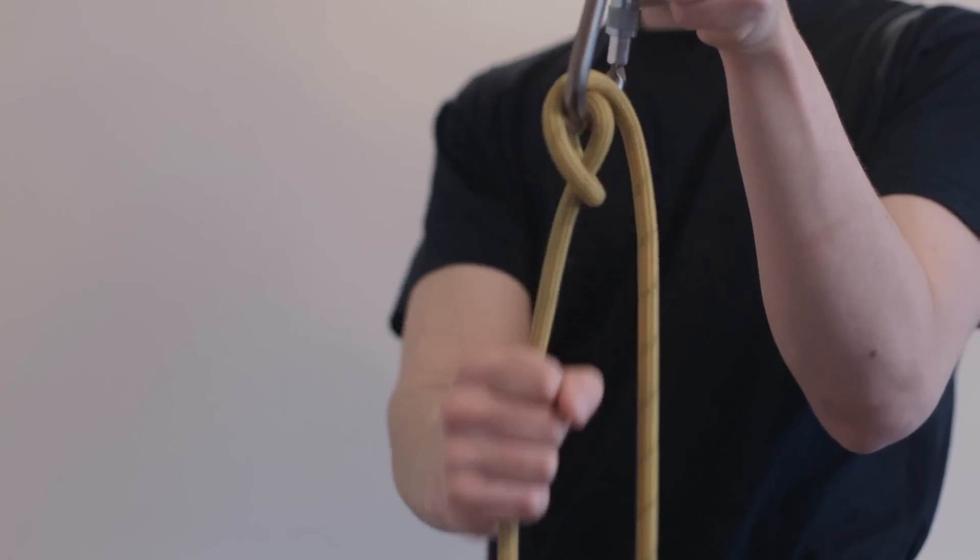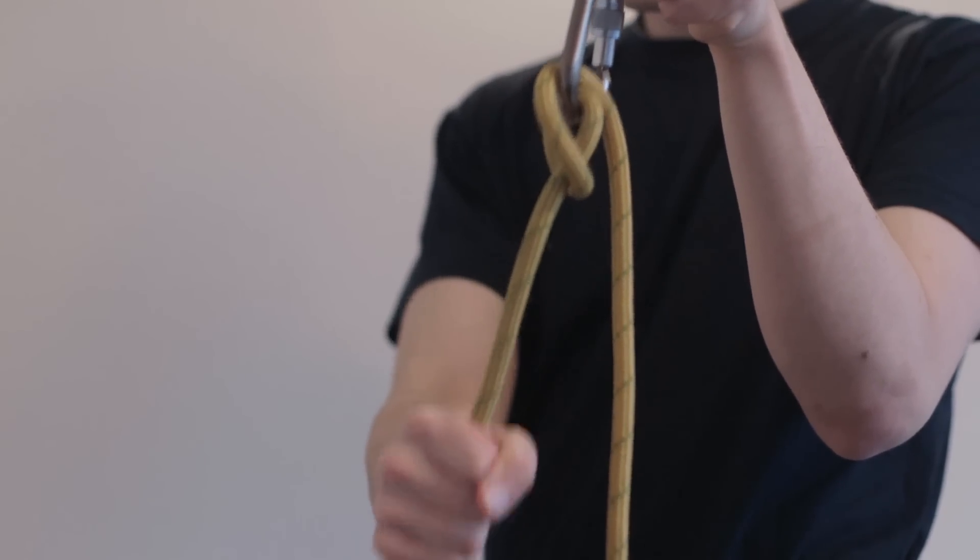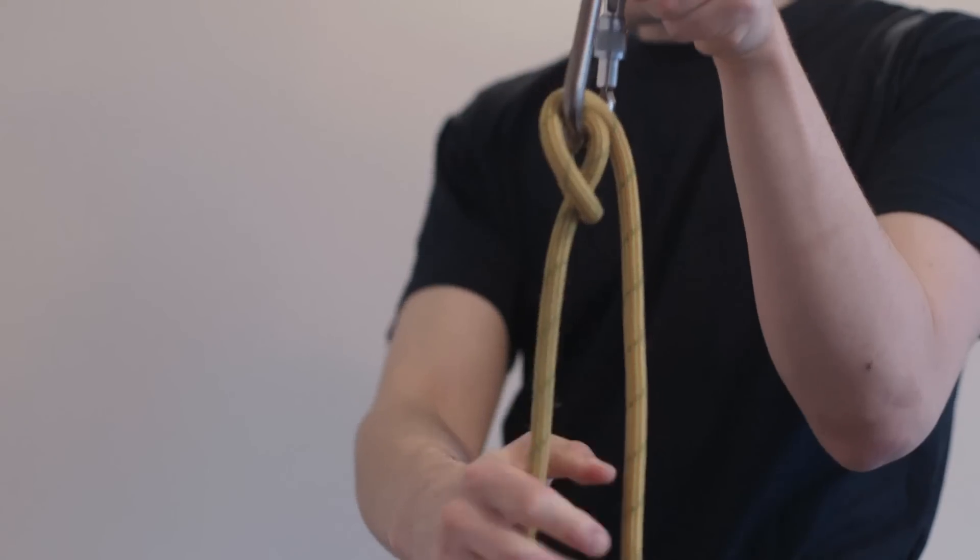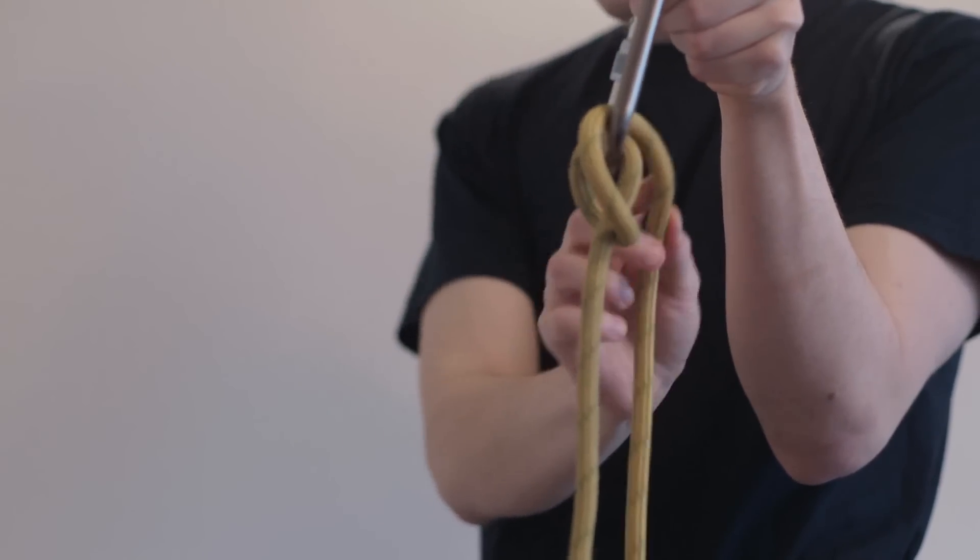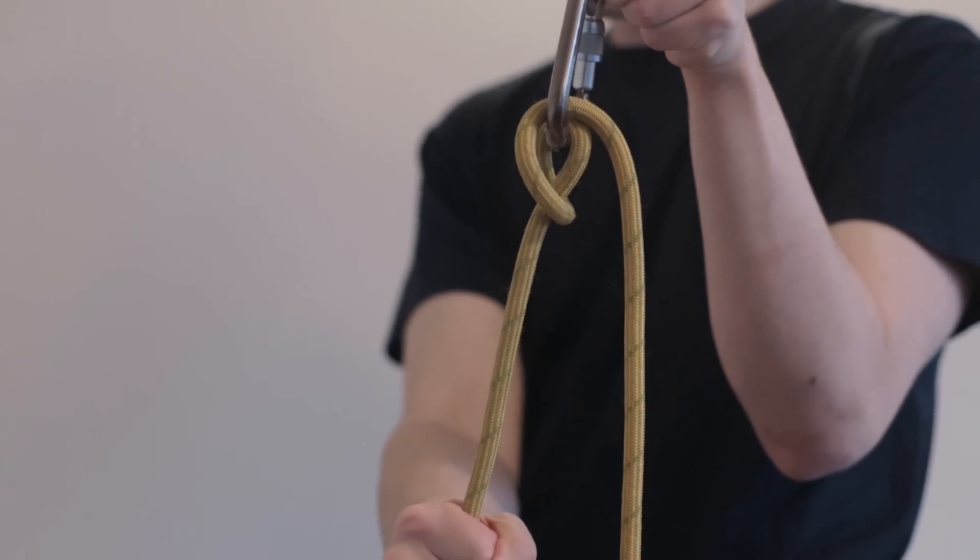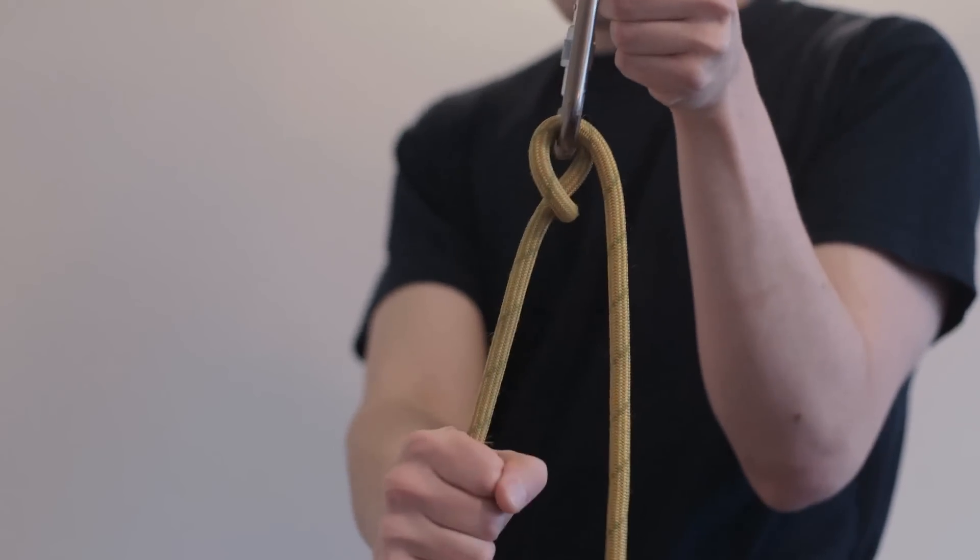So taking in slack, and remember if the climber falls, you grip this end of the rope tightly. Keep your hand on the brake end of the rope at all times, and there will be enough friction created in this Munter Hitch here to arrest that fall. It doesn't take a huge amount of strength just to clamp that rope off.